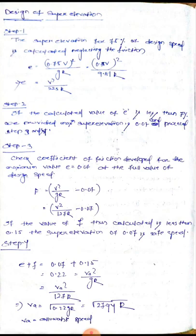In Step 2, if the calculated value of e is less than 7%, we provide the maximum super elevation of 0.07 and proceed to Steps 3 and 4. IRC recommends maximum super elevation is 7%, that is 0.07. So we compare the calculated e with 0.07. For example, if we calculated e equals 0.05, and 0.05 is less than 0.07, we provide maximum super elevation 0.07 and proceed to Steps 3 and 4.